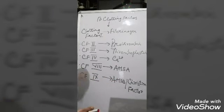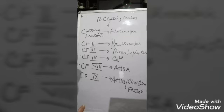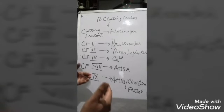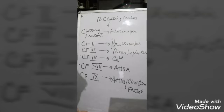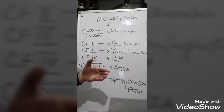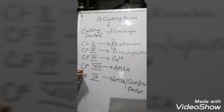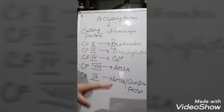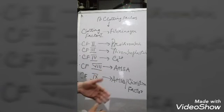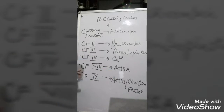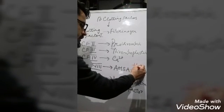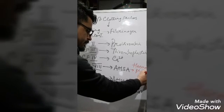Clotting factor 9 is also known as the Christmas factor. If there is deficiency of any clotting factor, the fibrin formation process will slow down, there will be less fibrin, less clot, and bleeding will not be stopped appropriately — there will be more bleeding. When there is deficiency of clotting factor 8, it leads to less fibrin formation, less clot formation, and more bleeding. That disease of more bleeding due to deficiency of clotting factor 8 we call hemophilia A.